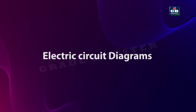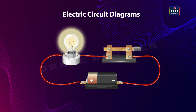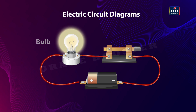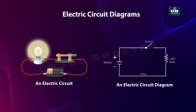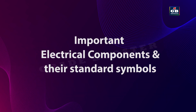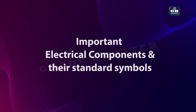Electric Circuit Diagrams. An electric circuit generally includes a cell or battery, a switch or plug key, electrical components and connecting wires. To make it easier to understand, we often use a schematic diagram where the different parts of the circuit are represented by standard symbols. Now let us see the important electrical components and their standard symbols.